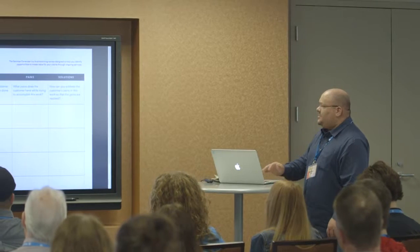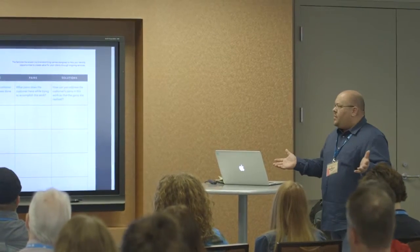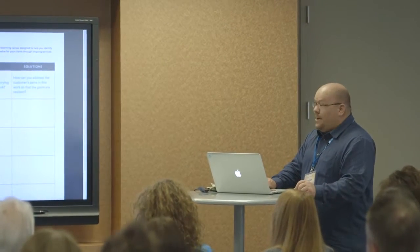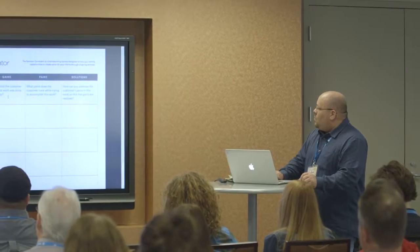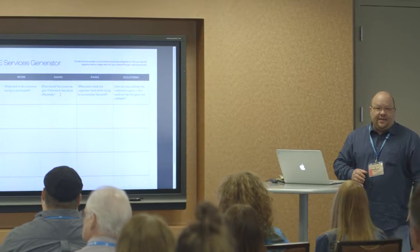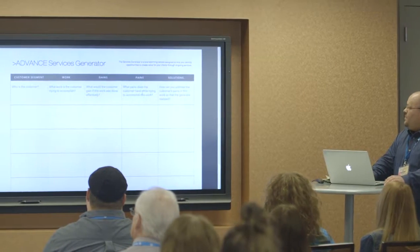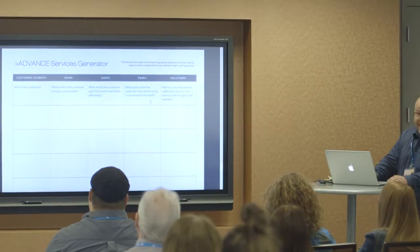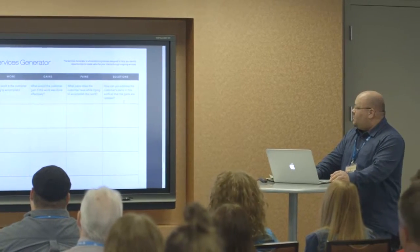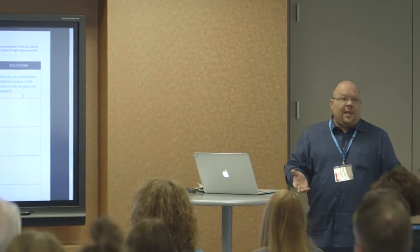Here's where it starts: identify a customer segment. What work do they do? What gains do they have? What pains and solutions? The second page gives instructions. Who is the customer? What kind of work is this customer trying to accomplish? What would the customer gain if this work was done effectively? What pains does the customer have while trying to accomplish this work? And how can you address the customer's pains so the gains are realized?